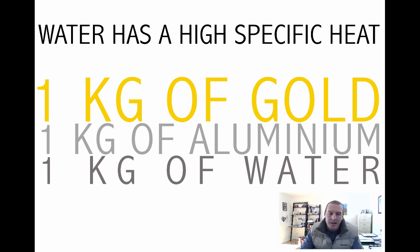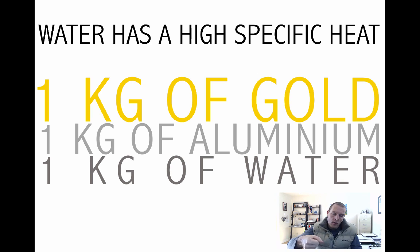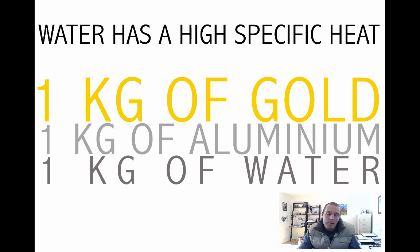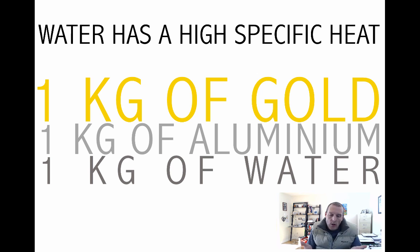Think about it like this: if you put a cast iron pan on your stove and fill it with water, which one heats up first? The pan warms up first because it's made of iron, which has a lower specific heat. That means it will raise its temperature more quickly for every joule or calorie of energy put into it compared to water. This is due to hydrogen bonding in water — when you put energy into water, rather than the molecules' kinetic energy going up immediately, the hydrogen bonds absorb that energy and break.